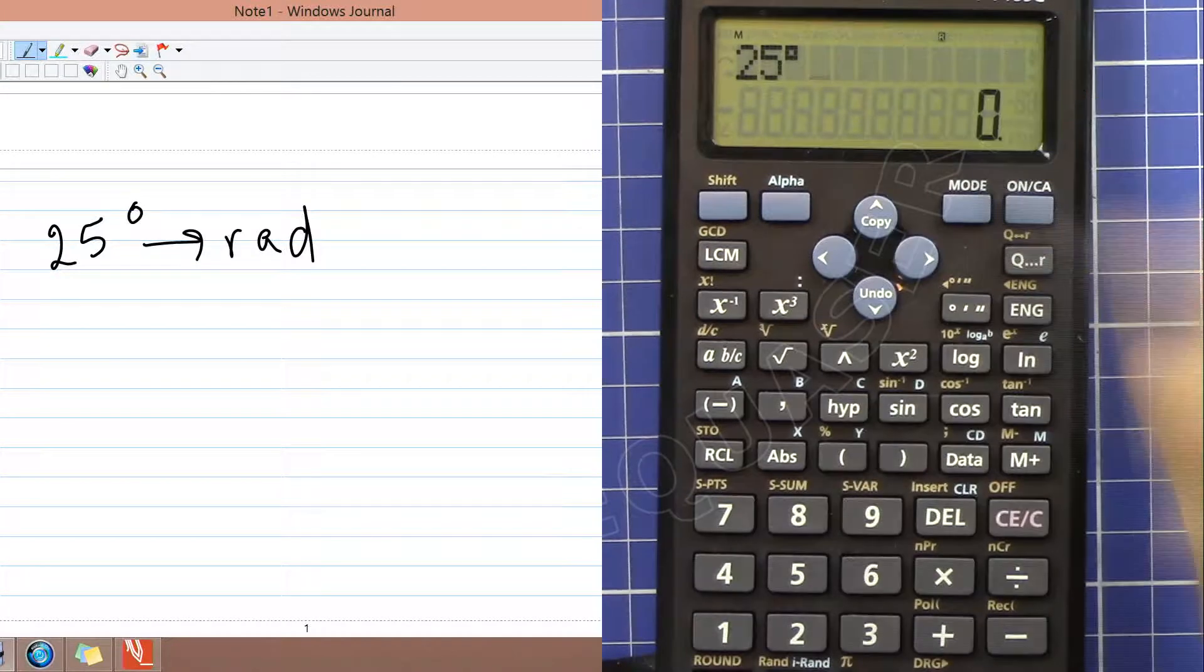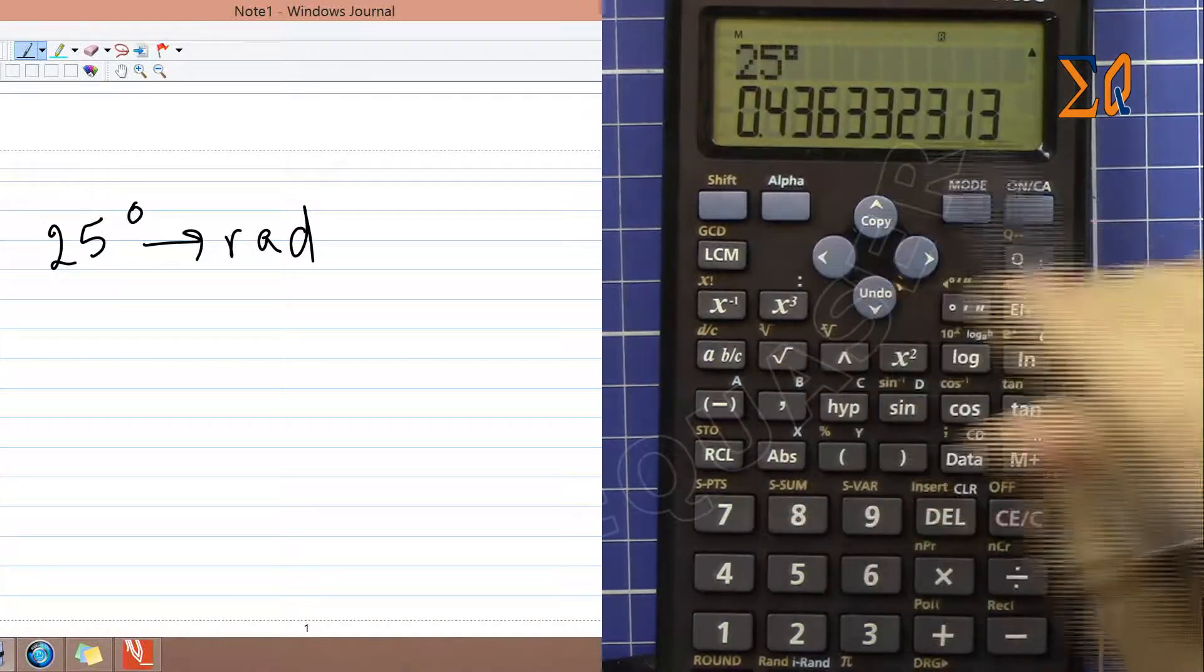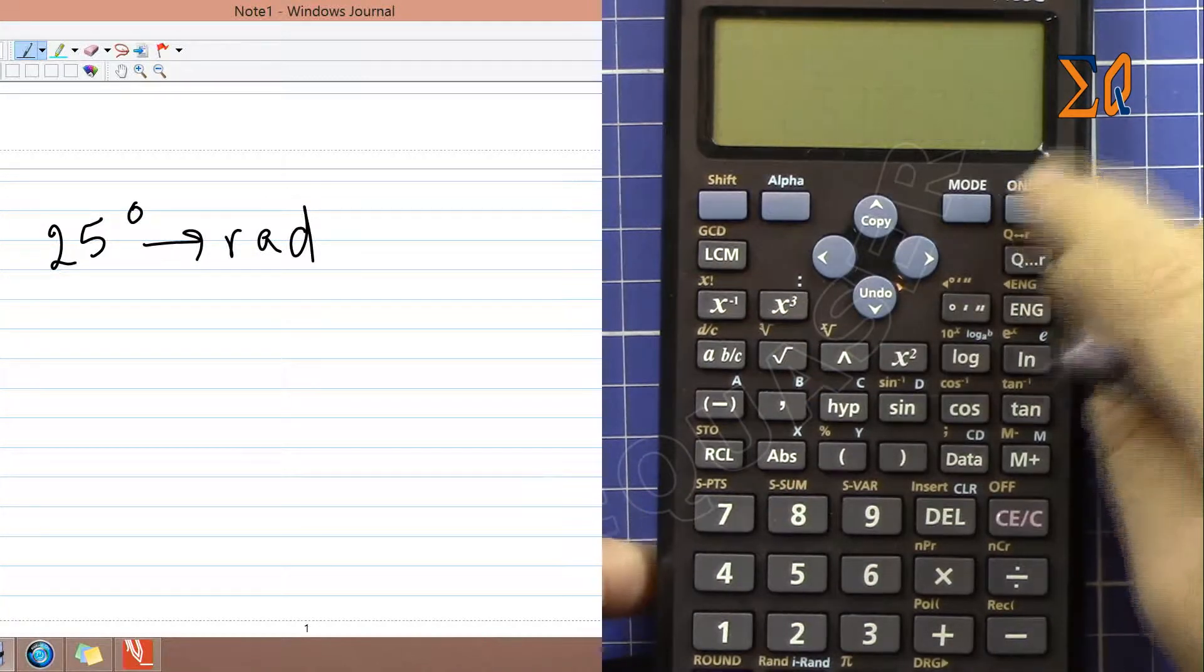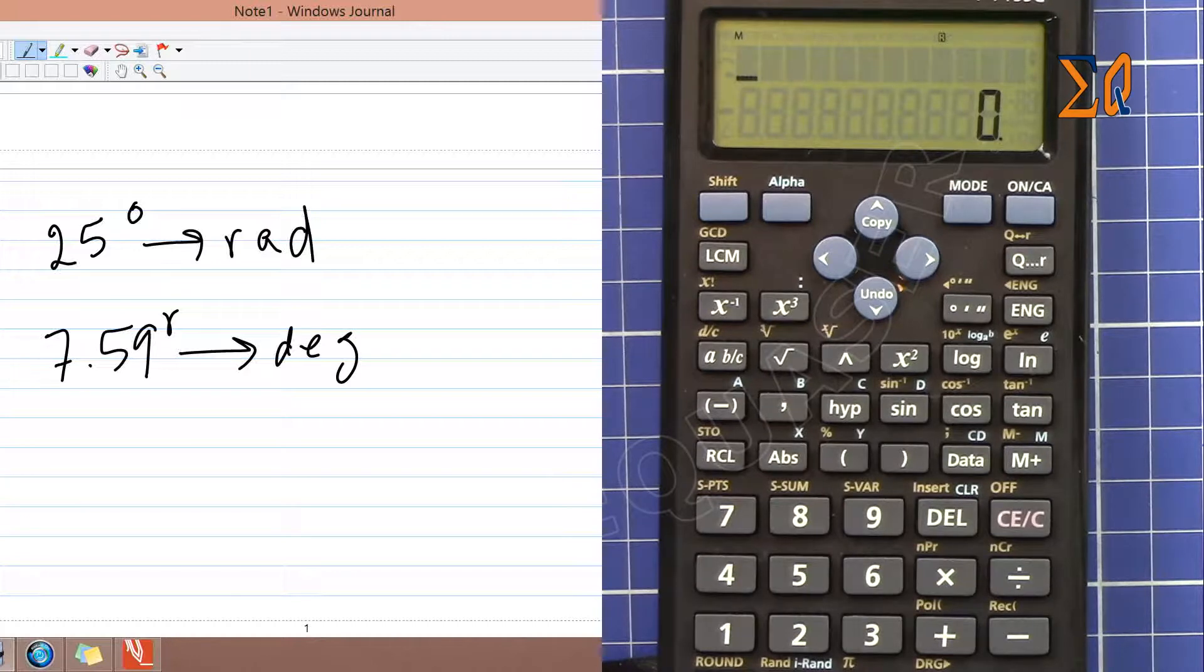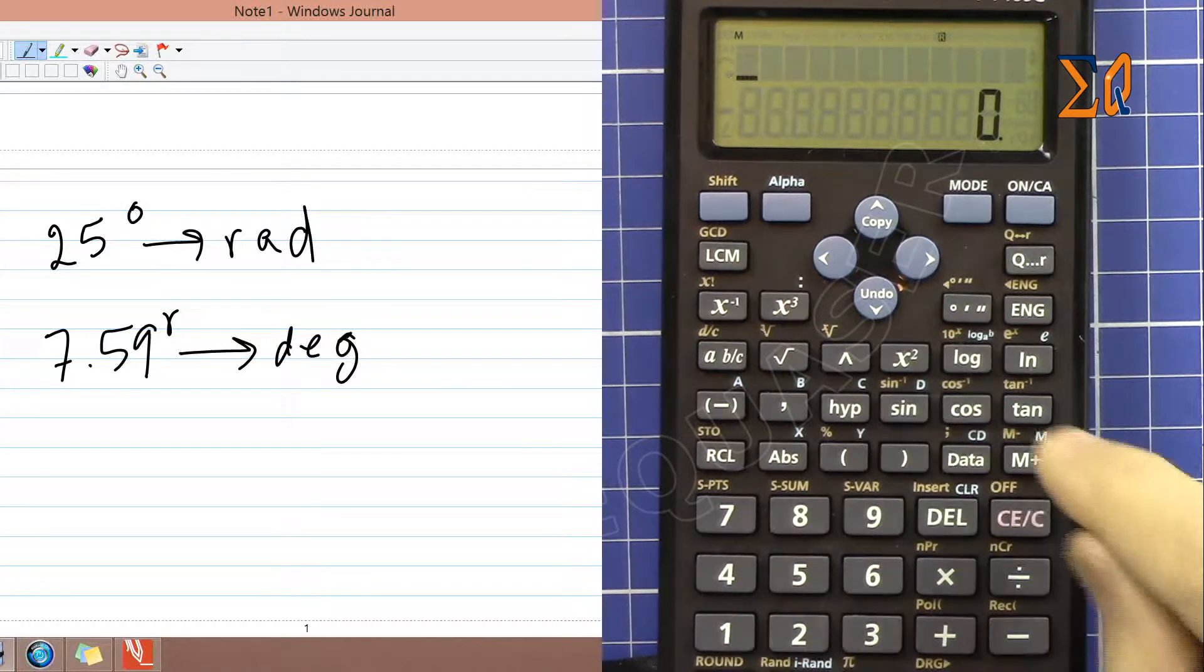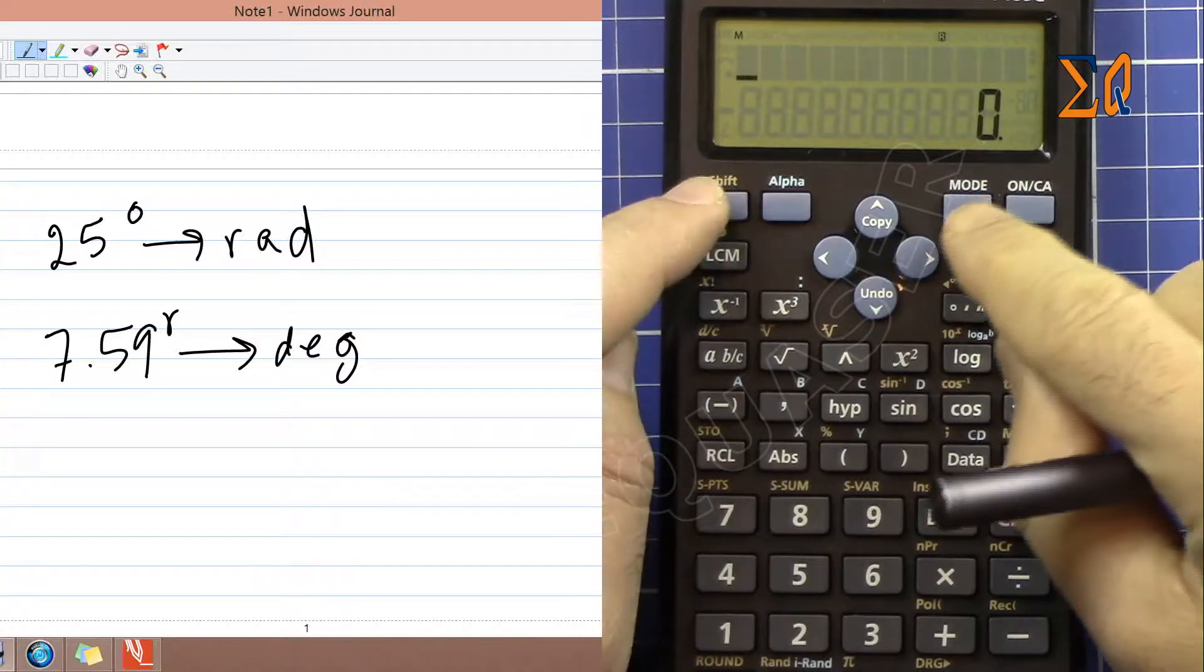Now let's say you have 7.59 radians and you want to convert it into degrees. Set your calculator to degree mode.